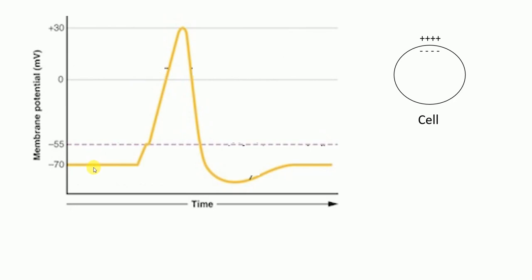This graph shows the action potential, which I'm going to explain in detail. The y-axis represents the membrane potential in millivolts, and the x-axis represents time. On the y-axis you might see numbers like minus 70 millivolts, minus 35 millivolts, zero, and plus 30 millivolts. This first part of the graph is called the resting potential.